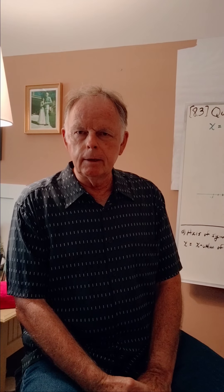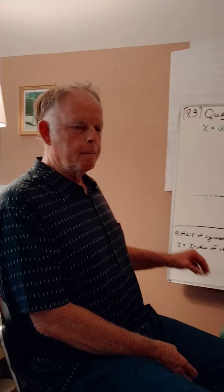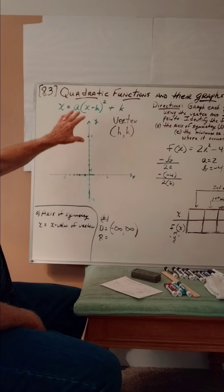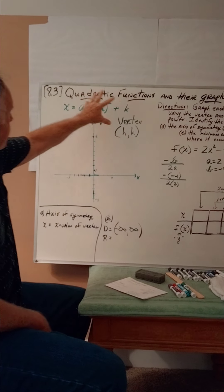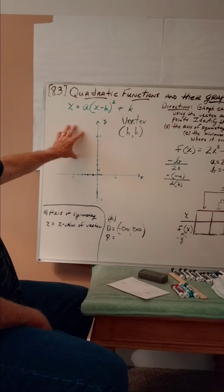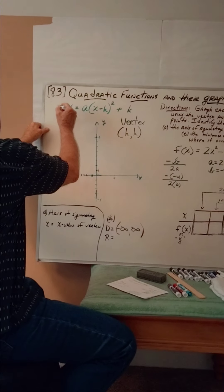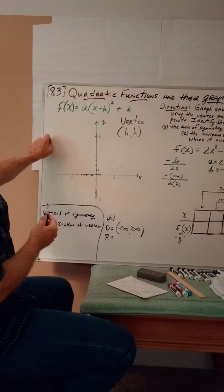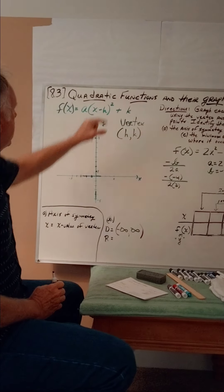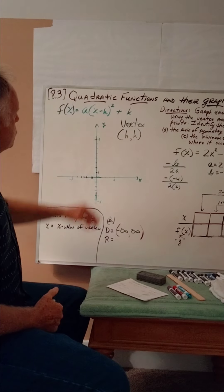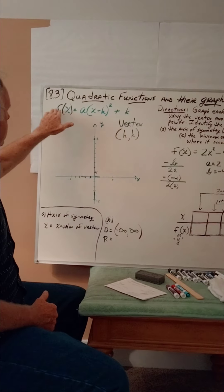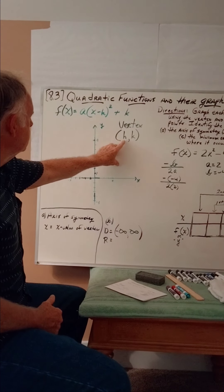So we're going to move into that second type up here on the board. The second form of a quadratic function will be written as: f of x is equal to a times the quantity of x minus h, squared, plus k. And the vertex of the function when written in this form will be h, k.